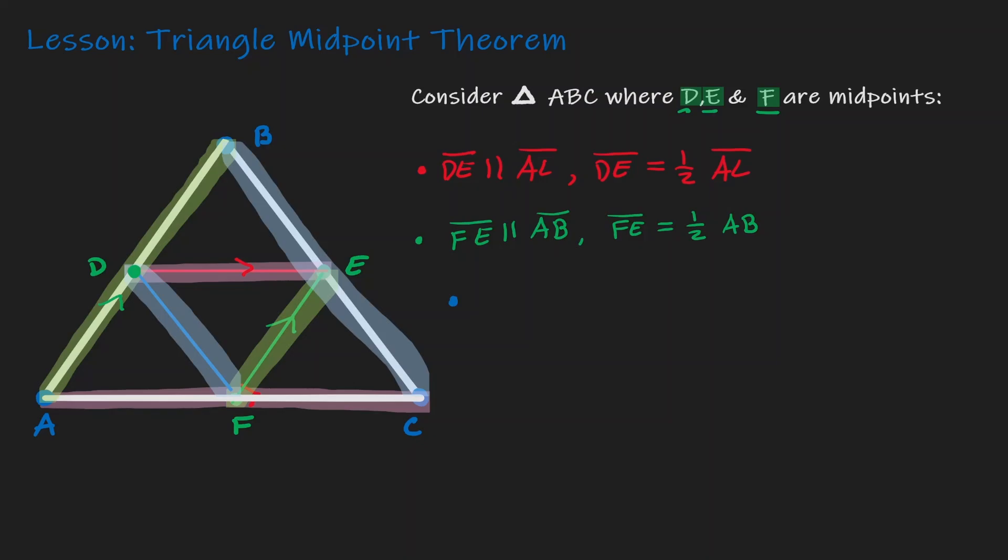And that special relationship is that DF is parallel to BC. So let's put that on a diagram. And then in addition, DF is also half the length of BC.